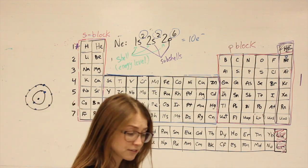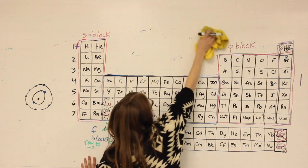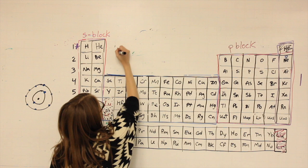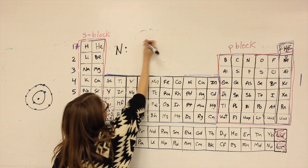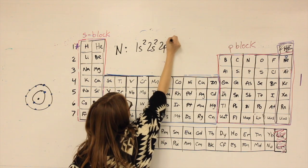If we look at something different, like nitrogen. Nitrogen is 1s2, 2s2, 2p3.